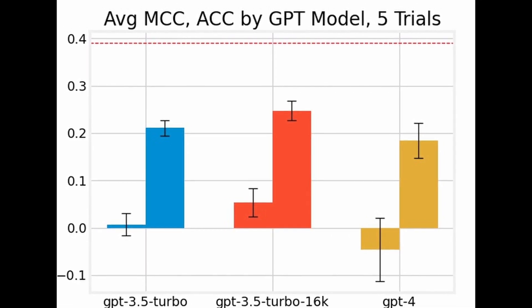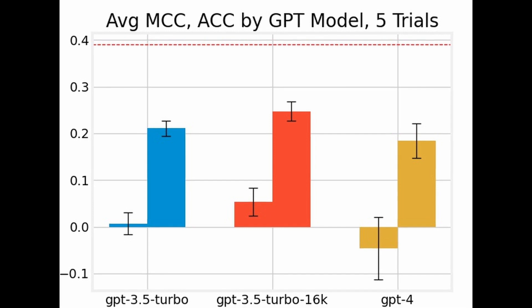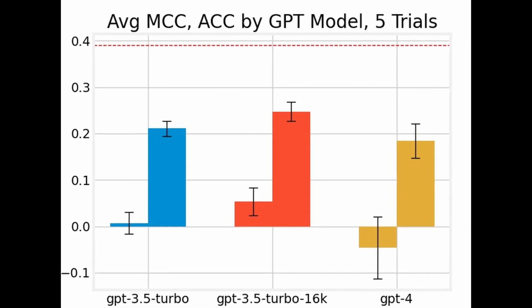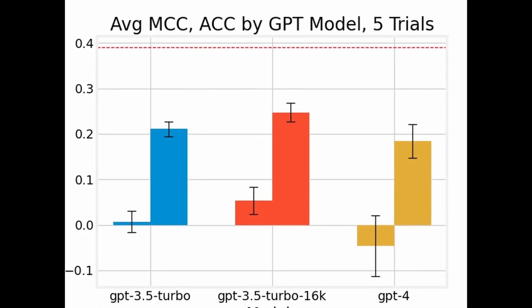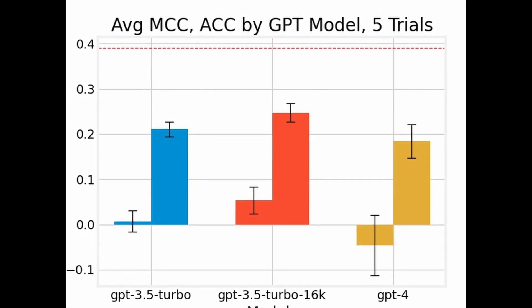Next, we tried the new GPT-3.5 Turbo with a 16K context length. The results were significantly better — it delivered an average MCC of 0.053 and an average accuracy of 24.7%. The standard deviations for MCC and accuracy were 0.039 and 2.1% respectively.